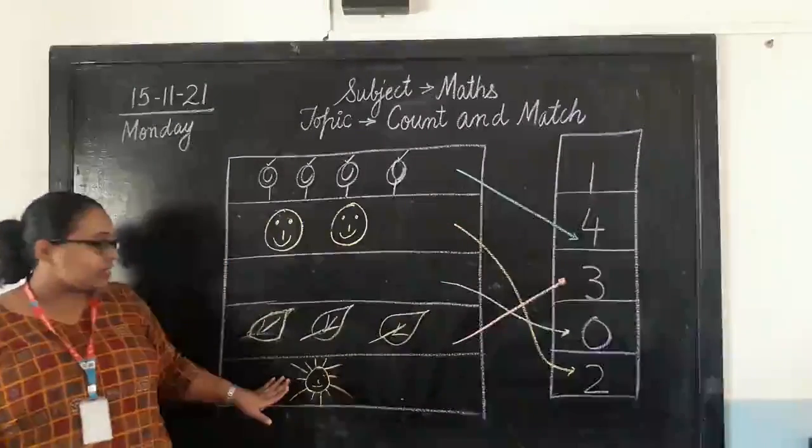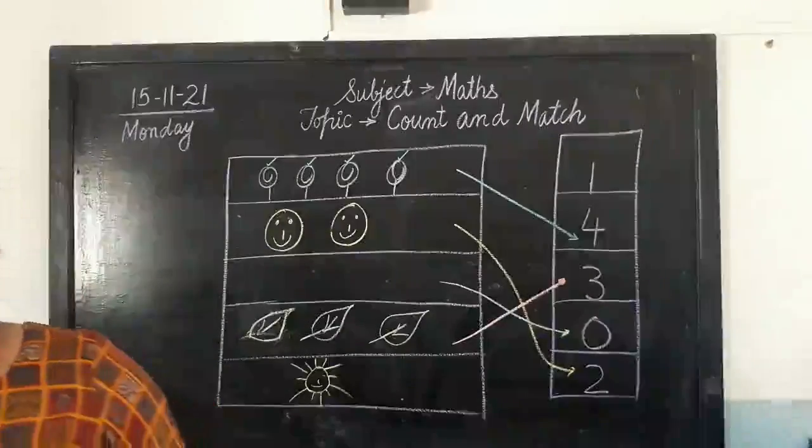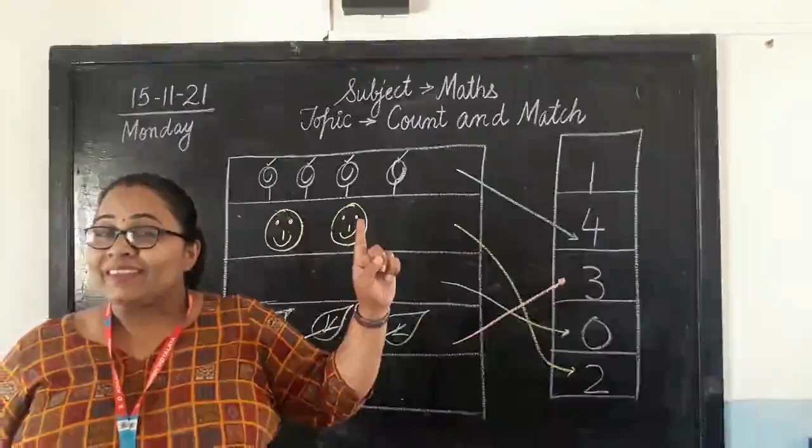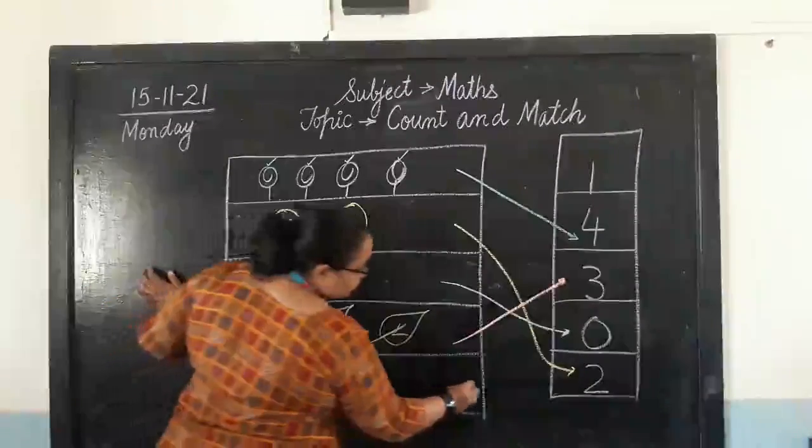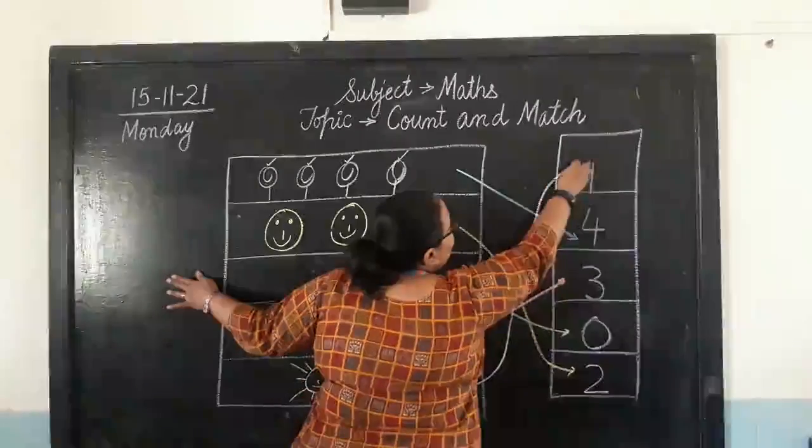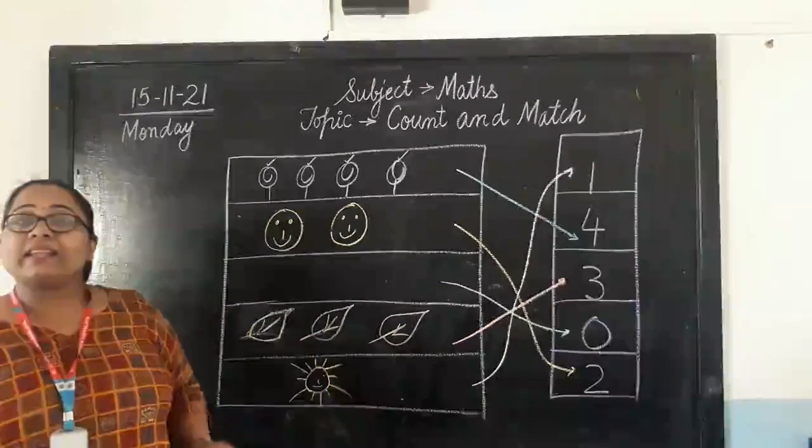Now, what is this we have? It's a sun. How many sun we have? Only 1. So, let's match it with number 1. Sun, we will take it to number 1. Like this. Is that clear?